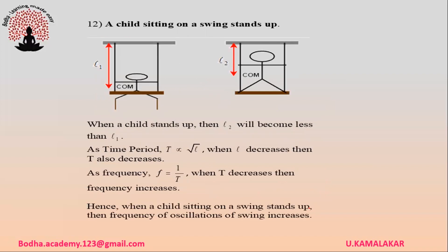A child initially in a sitting position on a swing stands up. When the child stands, the length of the pendulum decreases, since the length is the distance from the point of suspension to the center of mass of the bob. As length decreases, the time period decreases. Since frequency is the reciprocal of time period, the frequency of oscillations of the swing increases.